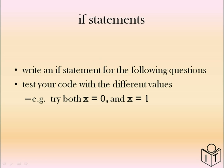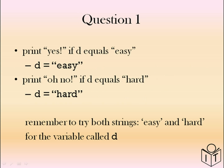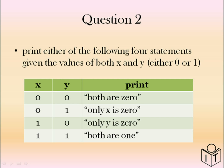The answers to these questions are all if statements, and you might want to test your code using different values like x equals zero and x equals one to see if the condition is true or false. Question one: print YES if d equals 'EASY', and OH NO if d equals 'hard'. Question two: x and y can be either zero or one — if they're both zero, print 'both are zero'; if they're both one, print 'they both are one'; if only y is zero, print 'only Y is zero'; if only x is zero, print 'only X is zero'.